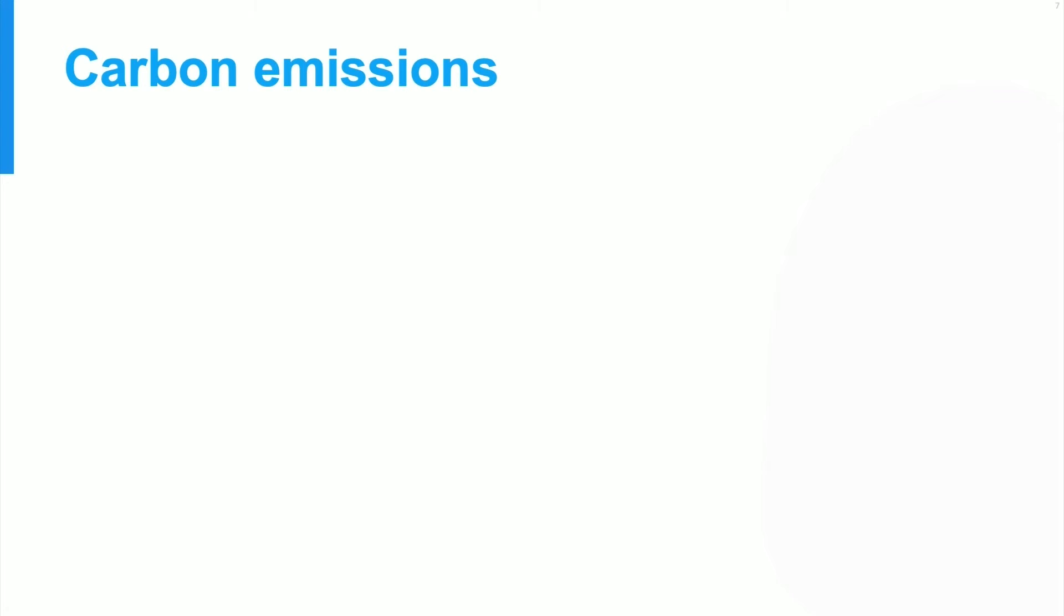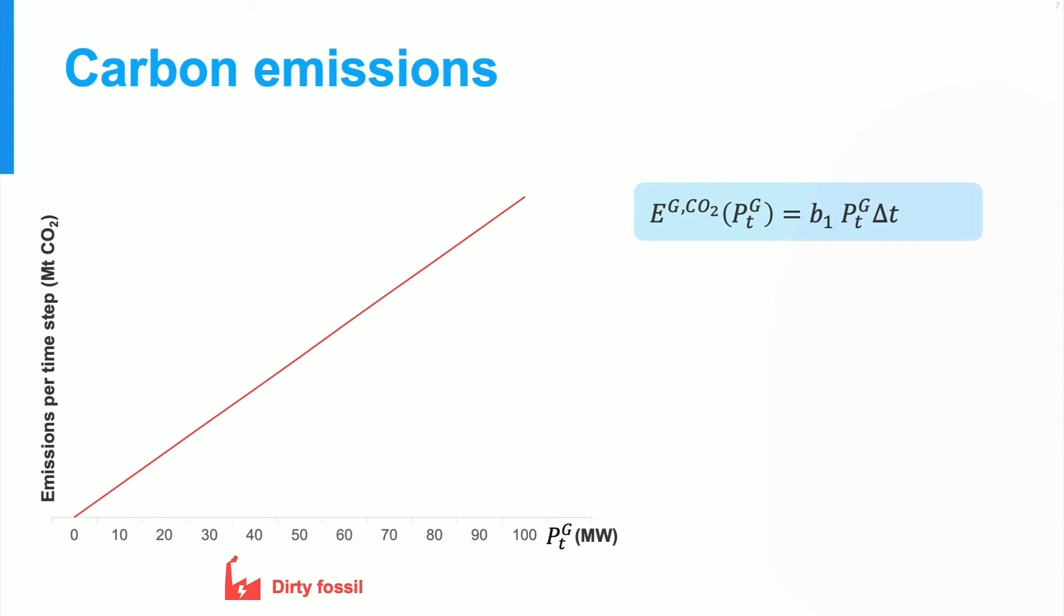Having covered costs, we proceed to emissions that result from the combustion of fossil fuels. Now to a first approximation, we can say that the emissions are linear in the amount of power that's being produced. If we produce twice as much power, we get twice the amount of CO2 emissions. And as with our cost model, we define a function with a parameter that we can adjust.